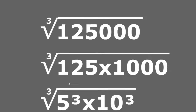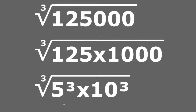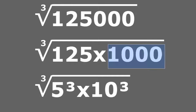Now let's find the cubic root of 125,000. I can factor 125,000 as 125 multiplied by 1,000. I know that 5 cubed equals 125, since 5 times 5 is 25 and 25 times 5 is 125. So 125 becomes 5 cubed. And 1,000 is also 10 cubed, since 10 times 10 equals 100 and 100 times 10 equals 1,000. So 1,000 becomes 10 cubed. Now I have the cubic root of 5 cubed multiplied by 10 cubed.